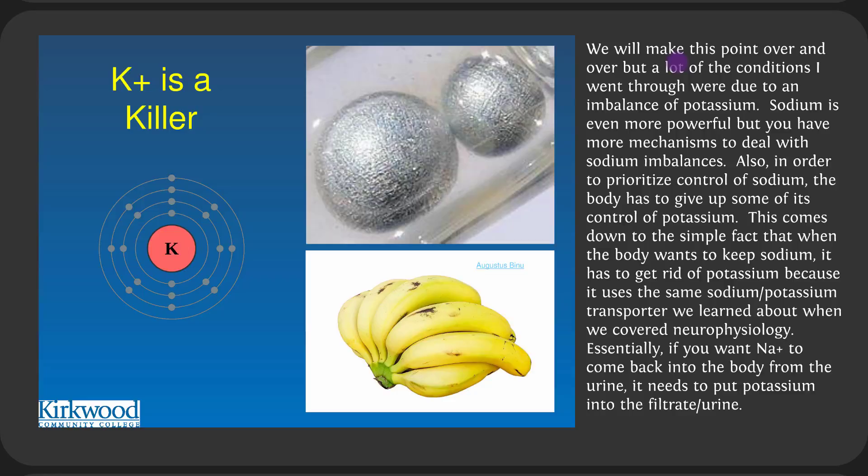Many of the conditions we covered were due to an imbalance of potassium. Sodium is even more powerful, but you have more mechanisms to deal with sodium imbalances. In order to prioritize control of sodium, the body has to give up some control of potassium. When the body wants to keep sodium it has to get rid of potassium, because it uses the same sodium-potassium transporter. When you pump sodium back into the blood, you have to pump potassium into the urine or filtrate.